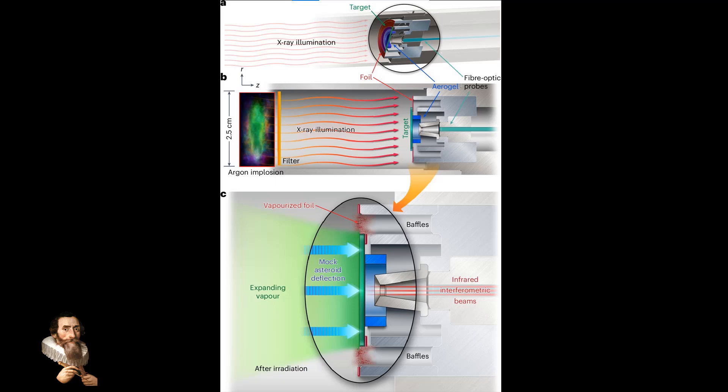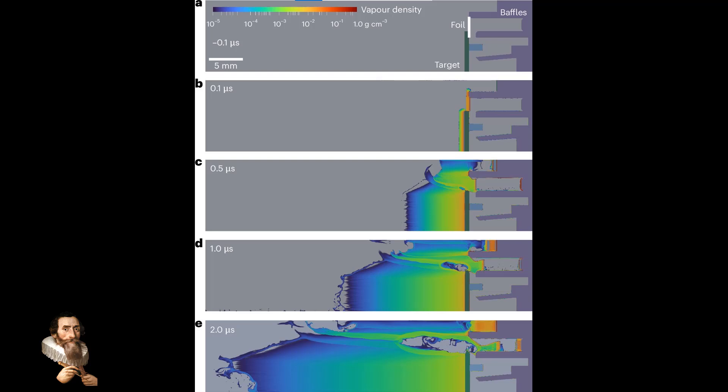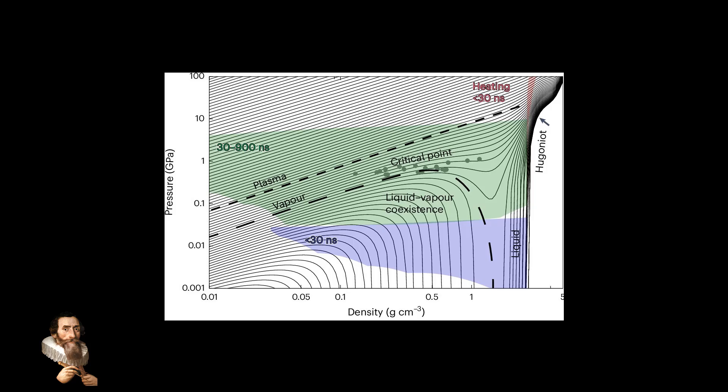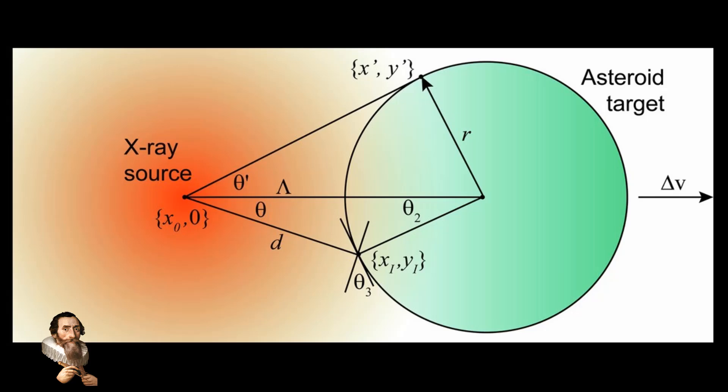This new study focuses on a different mechanism: the use of X-rays generated by the nuclear explosion. When a nuclear bomb detonates, it releases a burst of X-rays. These X-rays can vaporize the surface material of an asteroid, creating a jet of vaporized rock that acts like a rocket thrust. This process, known as nuclear ablation, can change the asteroid's velocity and trajectory without breaking it into multiple pieces.